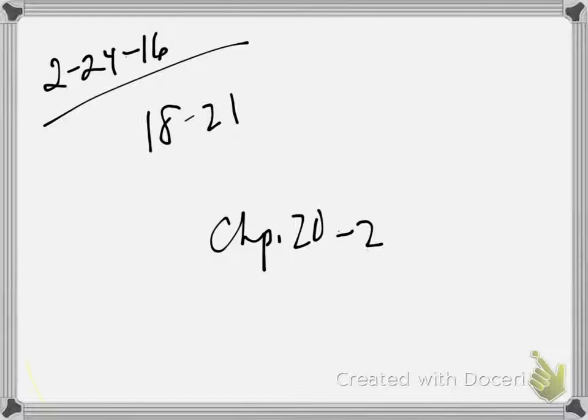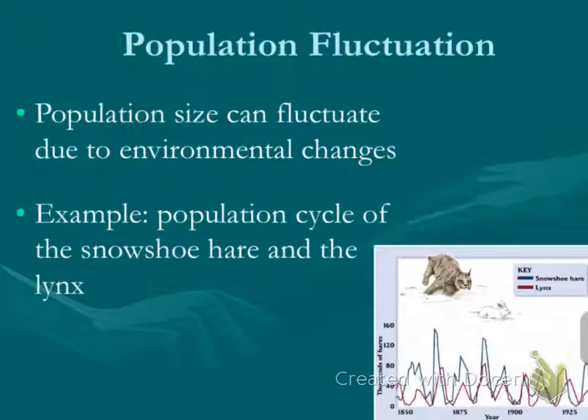So you looked yesterday at exponential versus logistic growth. You looked at population limiting factors, density dependent and independent. And now we're going to talk a little bit about just sort of how these populations fluctuate.